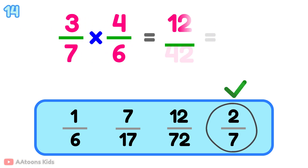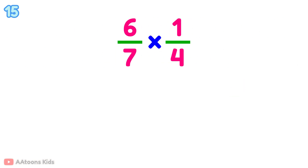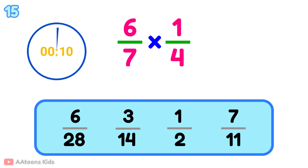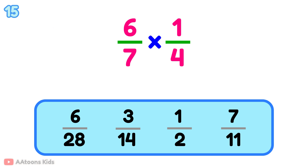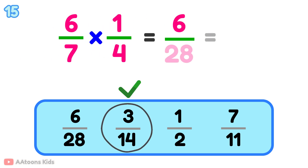2 over 7. What is 6 over 7 multiplied by 1 over 4? 3 over 14.